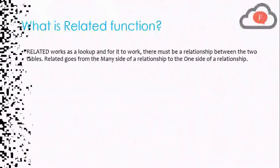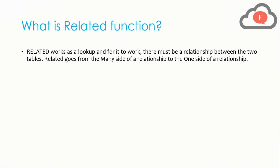Now let's talk about what is the Related function. Related works as a lookup and for it to work there must be a relationship between the two tables. Related goes from the many side of the relationship to the one side. That means if we have a star schema with a main fact table linked to a dimension table, the Related function always works on the fact table — which is the many side — while the dimension table is the one side.